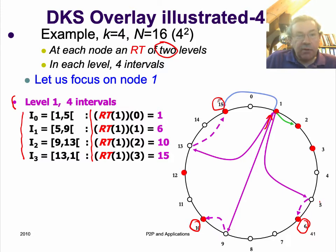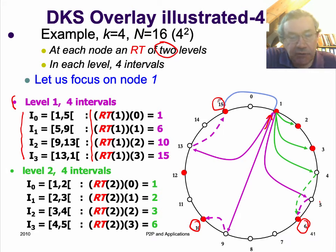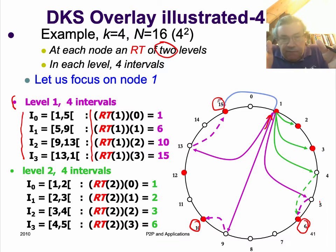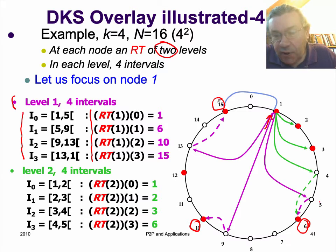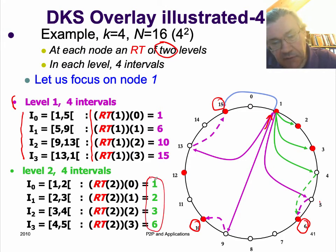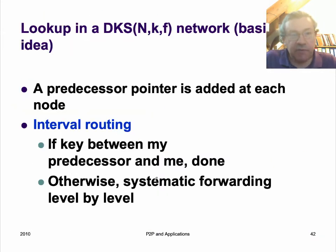Those are the level 1 routing tables. Each node also has a level 2 table. At node 1, the level 2 table looks at the first small interval — the interval for which node 1 is responsible — and divides it into 4 parts. Node 1 points to 2, 3; node 4 does not exist, and 5 does not exist, so it actually points to 6. So the entries in the level 2 table are 1, 2, 3, 6.